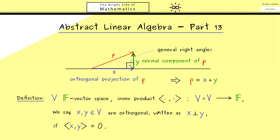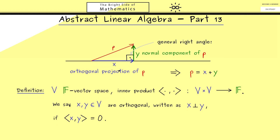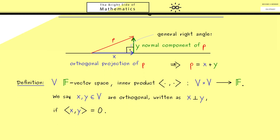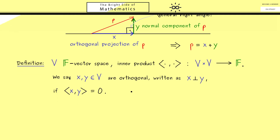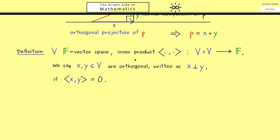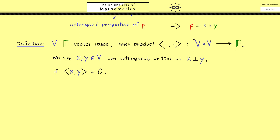So please remember, the symbol here simply means that x and y in the given inner product give us 0. So you see, this is not complicated at all. And in the picture above, we want that x and y in the inner product give us 0. So we could say, the picture looks always the same, but the interpretation and meaning is different depending on which inner product space we have.